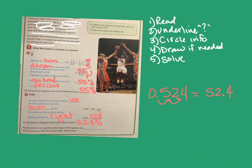Now I just compare: is 55% for the Phoenix Suns higher than 52.4% for the Miami Heat? Yes, it is. So the Phoenix Suns had a greater percent of games won and were more successful during the 2008-2009 season.